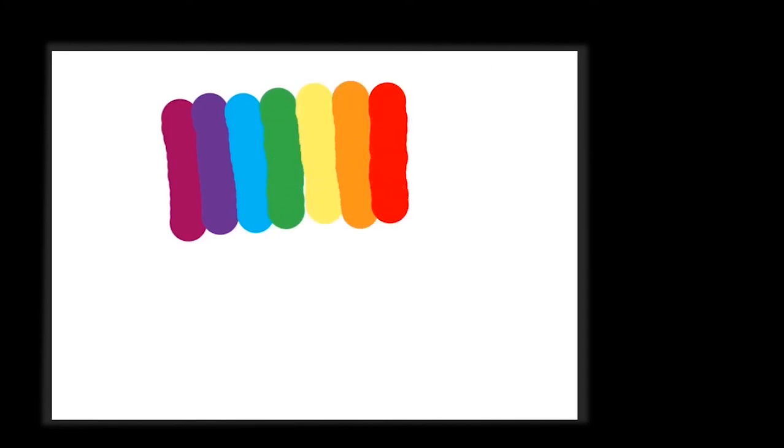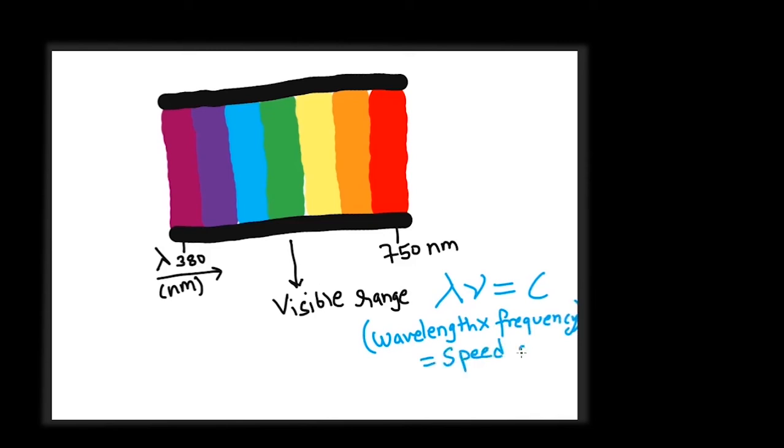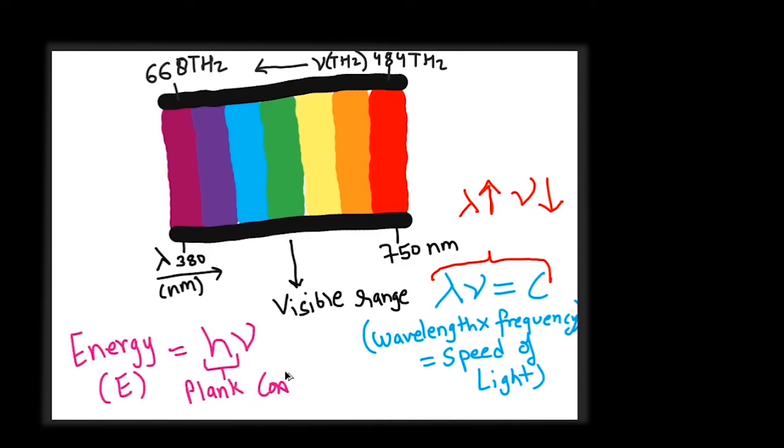Our eyes are sensitive to the visible spectrum, which has violet on one end and red on the other. The wavelength of violet light is 380 nanometers, and that of red is around 750 nanometers. We know that wavelength times frequency is the speed of light, so we can calculate the frequency of this range as violet having around 668 terahertz and red having around 484 terahertz. The energy of radiation depends on its frequency and increases with frequency. The inverse relation between frequency and wavelength here is clear.